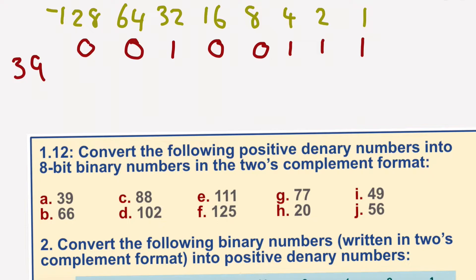So 39 would be 1 lot of 32, and of course we've got 7 added onto that to give us 39. That would remain 0 to say we're not going to introduce a minus number to this. So 39 equals 0, 0, 1, 0, 0, 1, 1, 1 in 2's complement binary. It's exactly the same as we've done in the past.